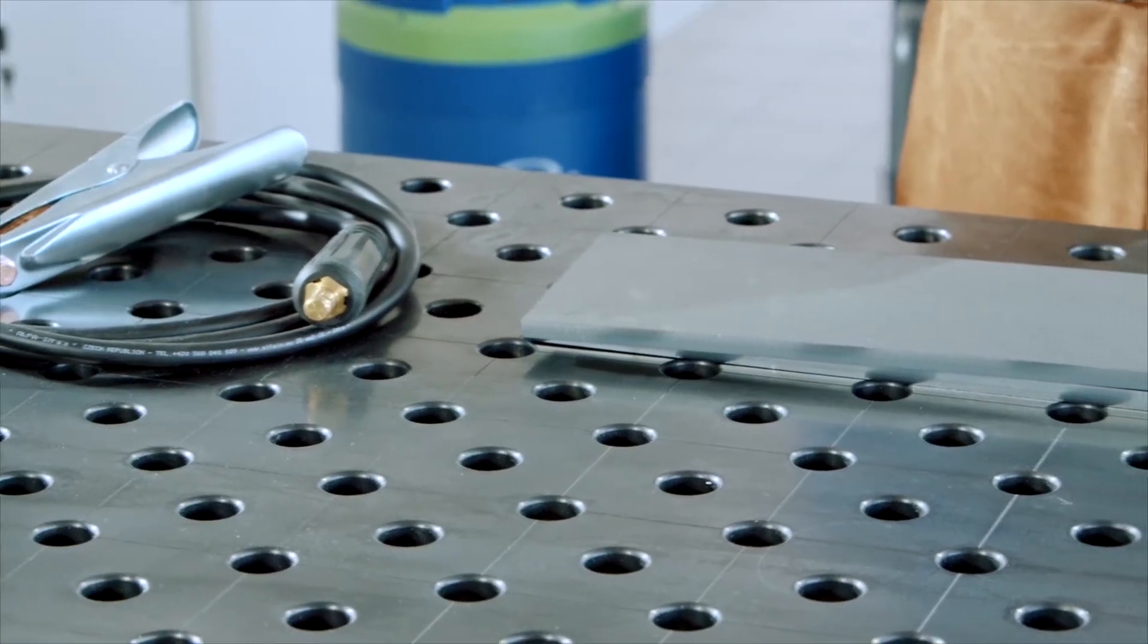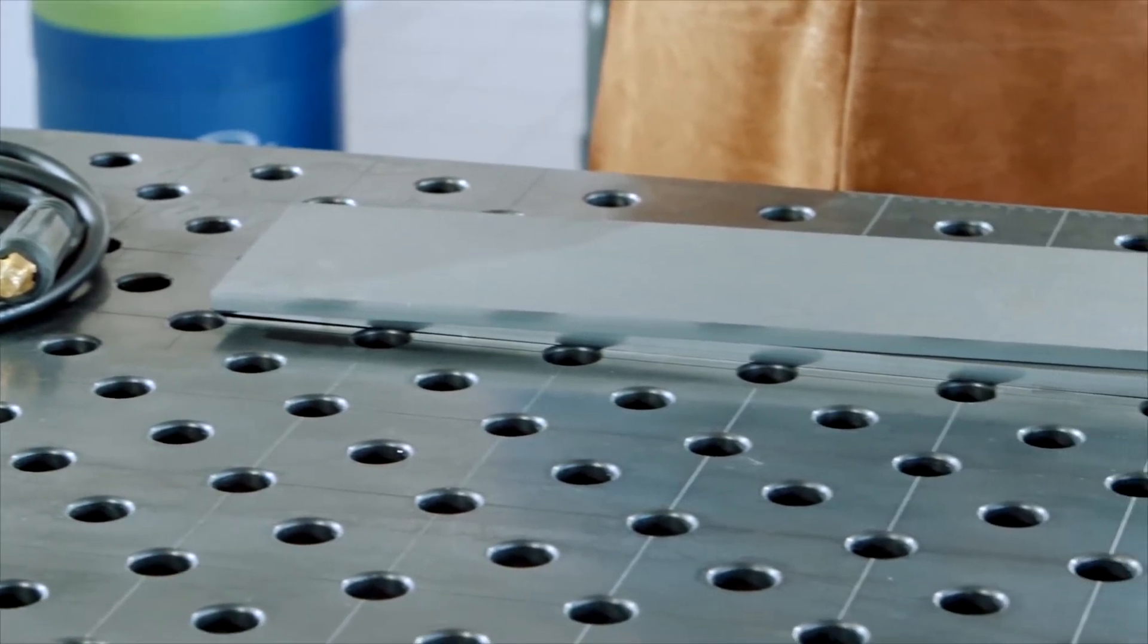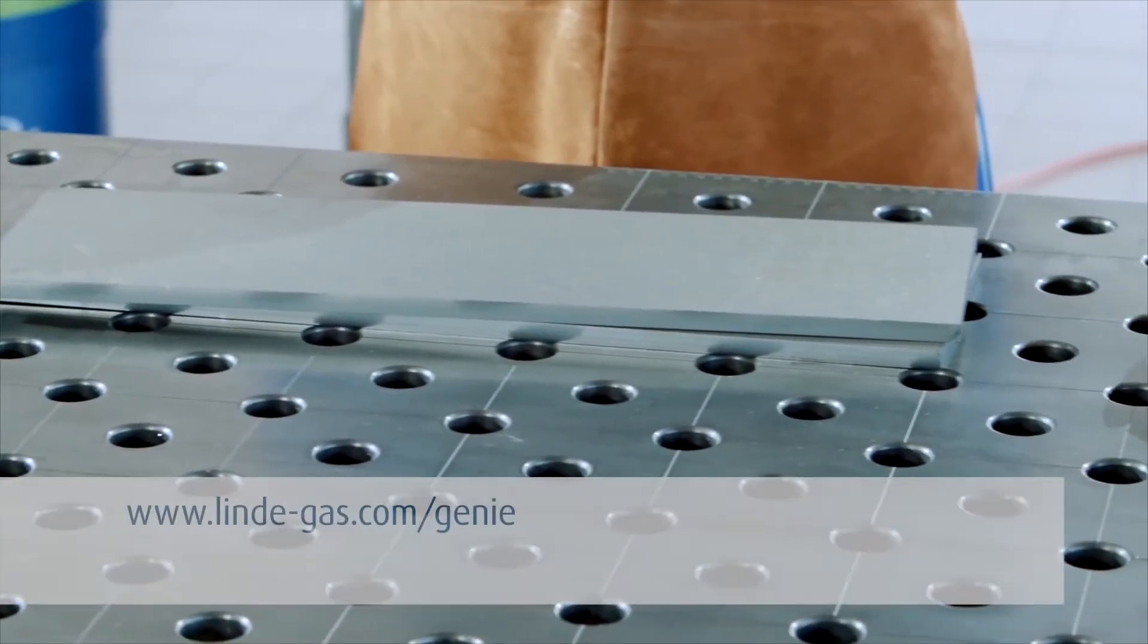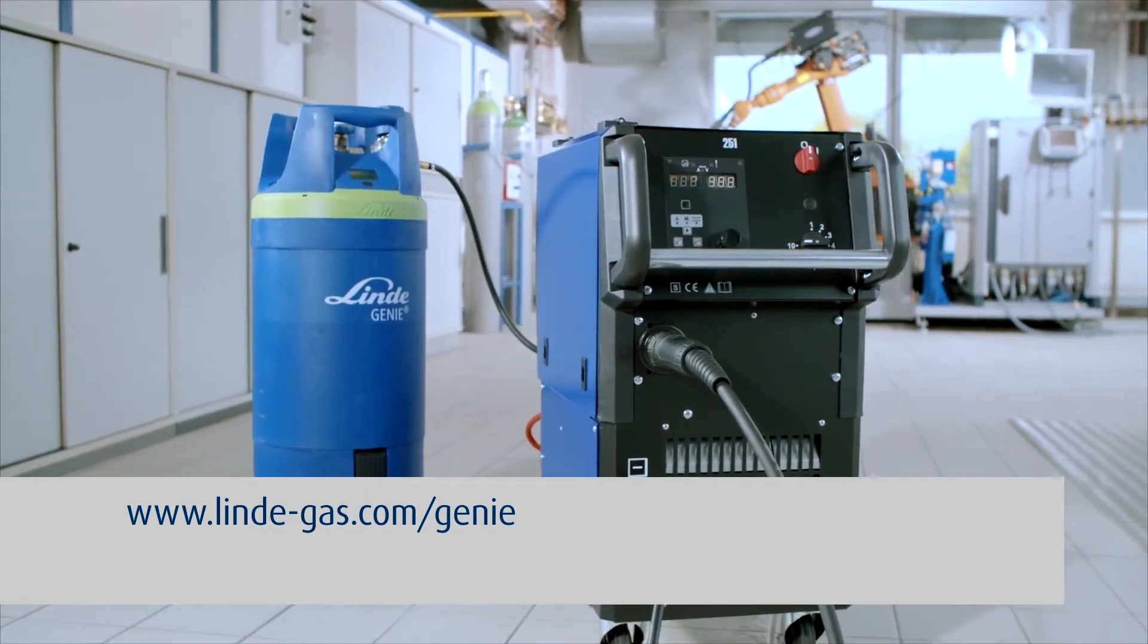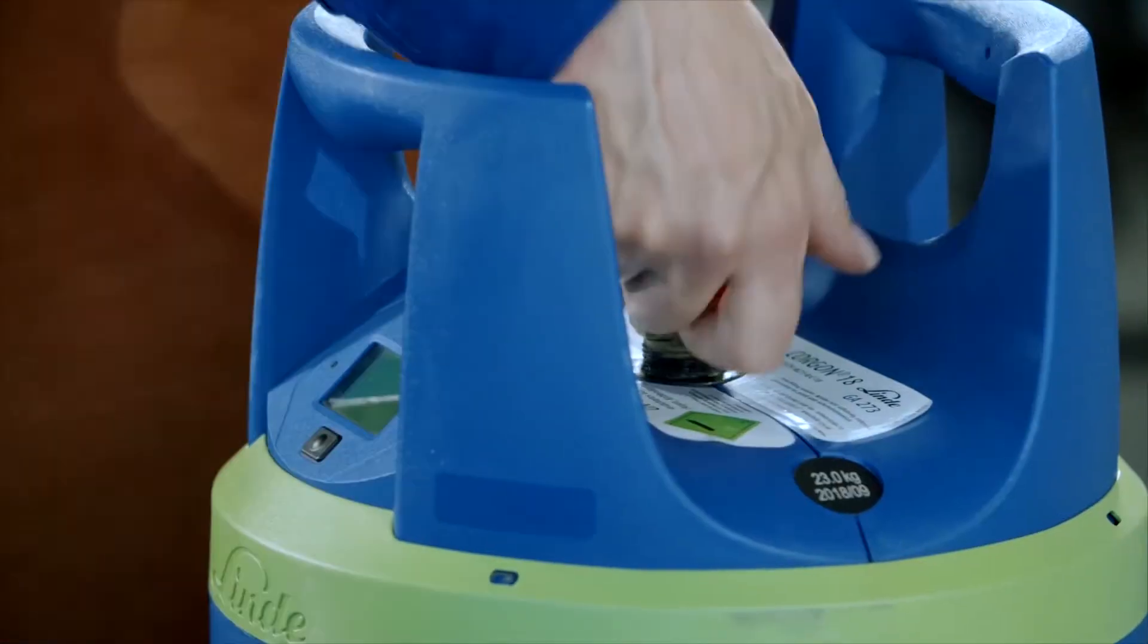Today we'll be welding 10 mm or 0.4 inch mild steel with a blasted surface using Corgon 18, a gas mixture comprising 82% argon and 18% CO2.